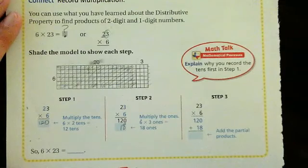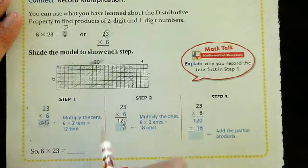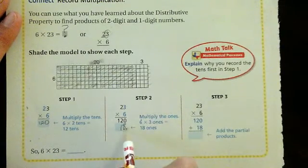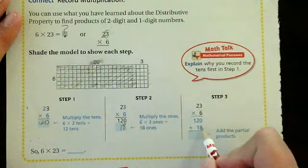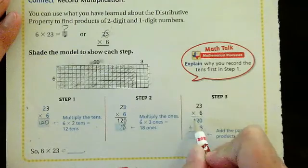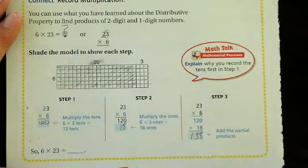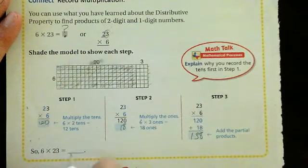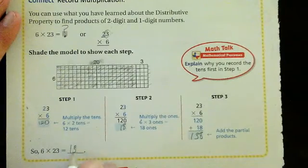Alright, now I need to add my products. One twenty plus eighteen. Zero and eight is eight. Two and one is three. Bring down my one. So, twenty-three times six is one hundred thirty-eight.